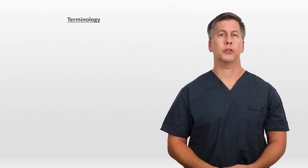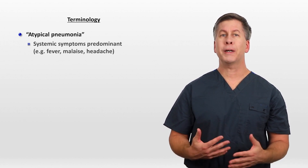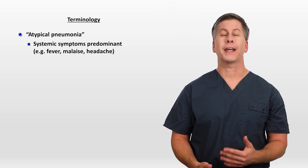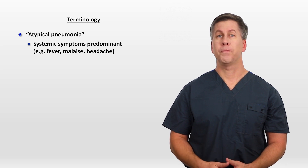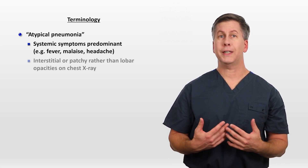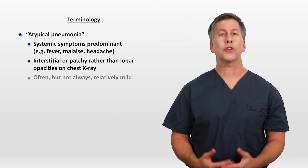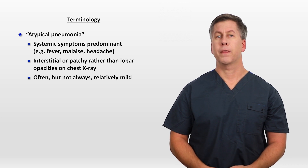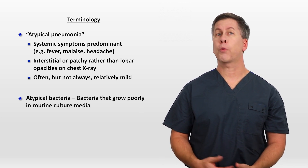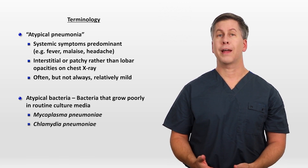I'll take a moment to discuss a few confusing points of terminology. Atypical pneumonia refers to a pneumonia in which systemic symptoms such as fever, malaise, and headache predominate over respiratory symptoms such as dyspnea. The chest x-ray shows interstitial or patchy opacities rather than lobar ones, and the illness is often, but not always, relatively mild in severity. Atypical bacteria are bacteria that grow poorly in routine culture media, including mycoplasma, chlamydia, and legionella.